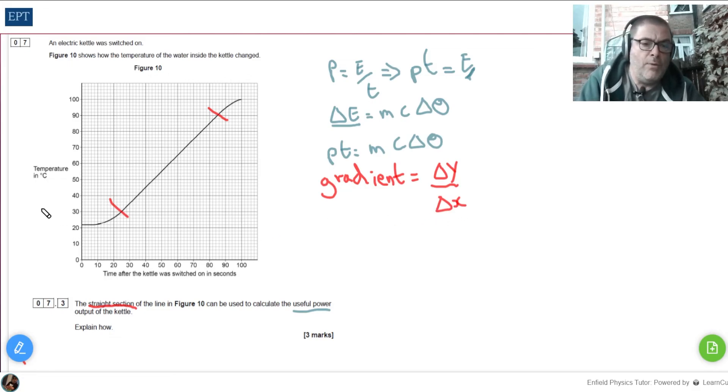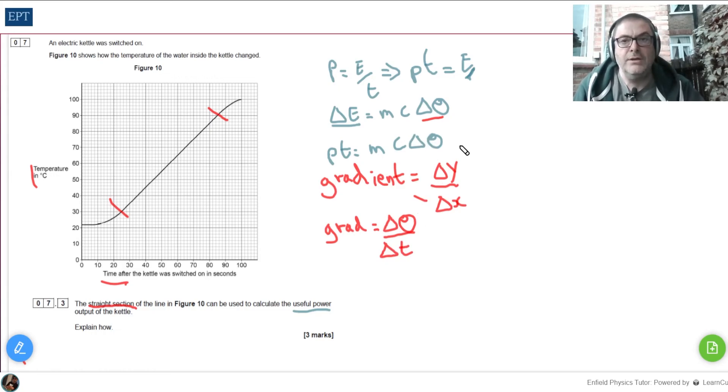So what have we got on our y-axis? Temperature. So the gradient, and I'm just going to call it grad, equals change in temperature, looking a bit familiar, and over on the x-axis we've got time. So under here we can say T, but really we should have delta, shouldn't we, because remember it's changing. Next in this question, delta T and T are again the same thing in much the same way that E and delta E were.